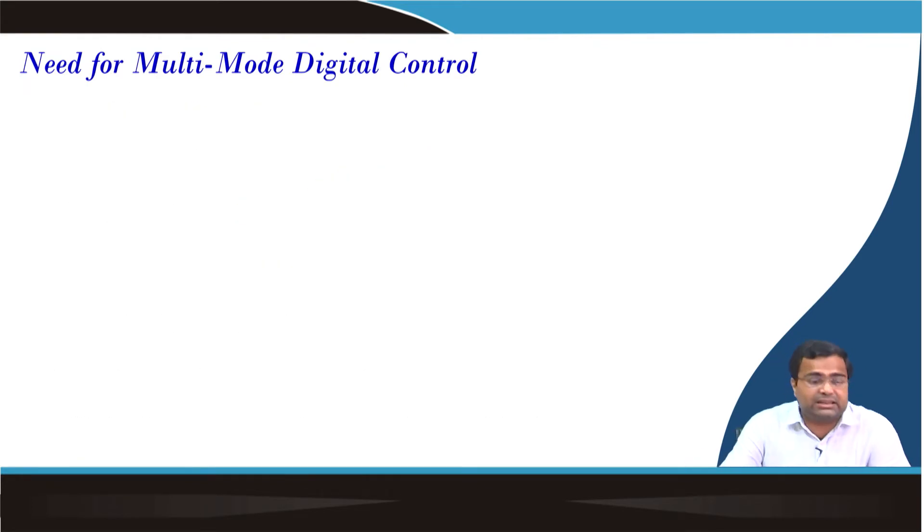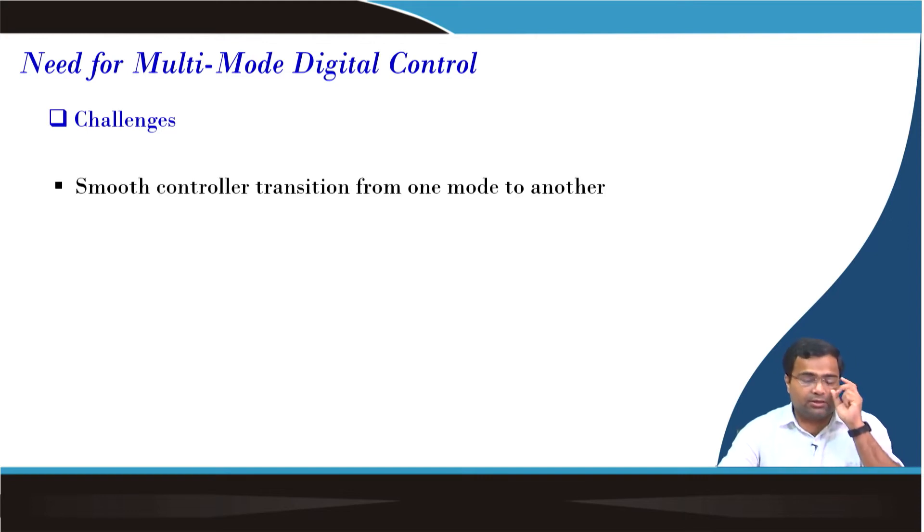What are the difficulties? The challenges are how to achieve smooth controller transition. Suppose we are using PWM and PSM or PWM and PFM, how to make sure to have a smooth transition between them? Next, how to avoid integrator windup? Suppose if you are operating using PFM or PSM but you have a PWM running in the background with an integrator, then there is a possibility of integrator windup problem. Similarly, if you are going from PSM to PWM, the error can be large and that may cause integrator windup problem. So you need to make some anti-windup arrangement of the integrator.